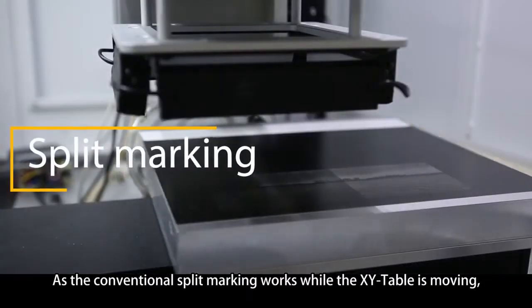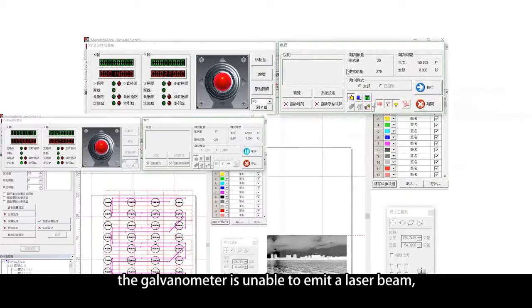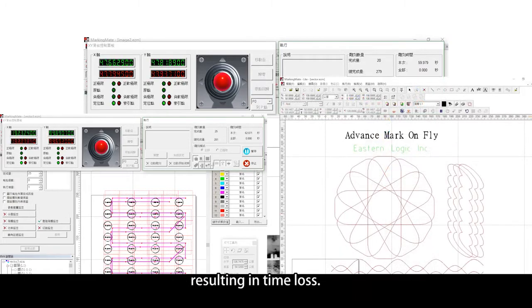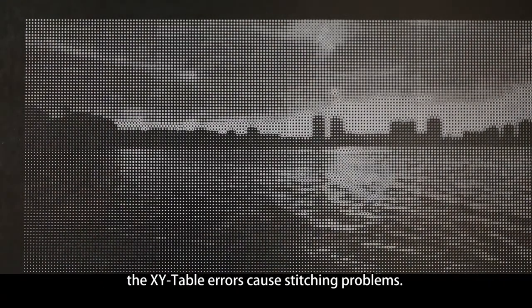As the conventional split marking works while the XY table is moving, the galvanometer is unable to emit a laser beam, resulting in time loss. When split marking is invoked to process large images, the XY table errors cause stitching problems.